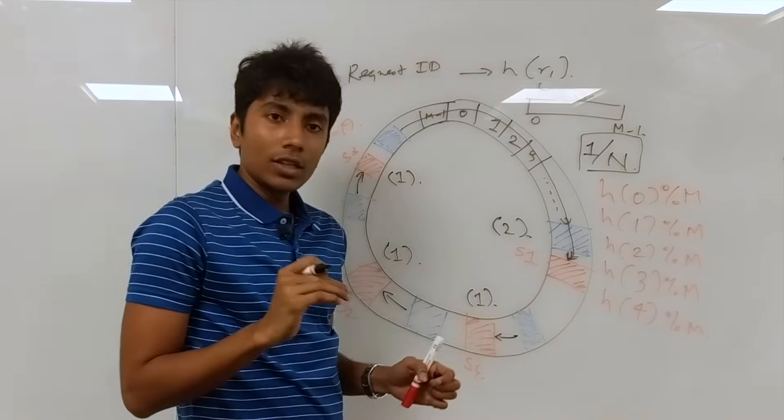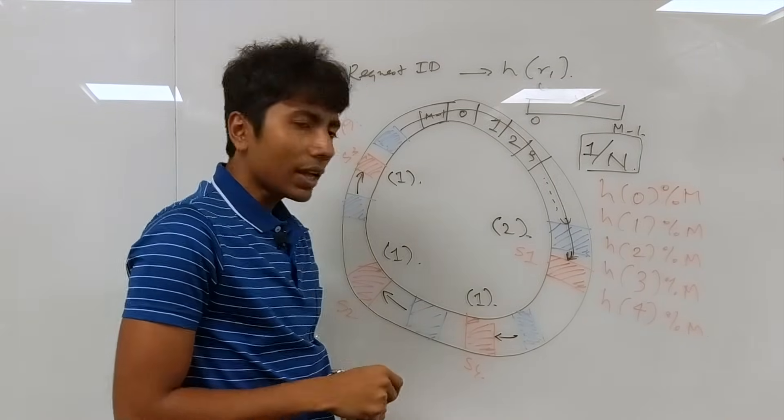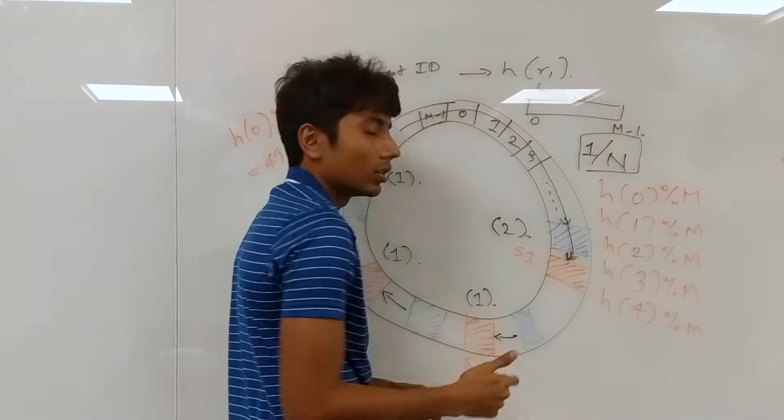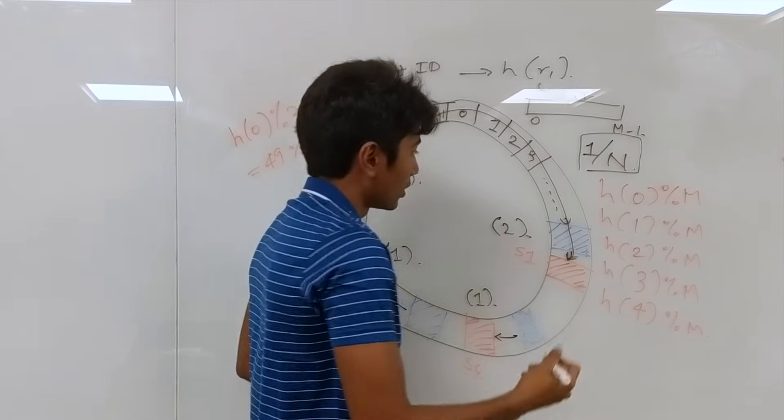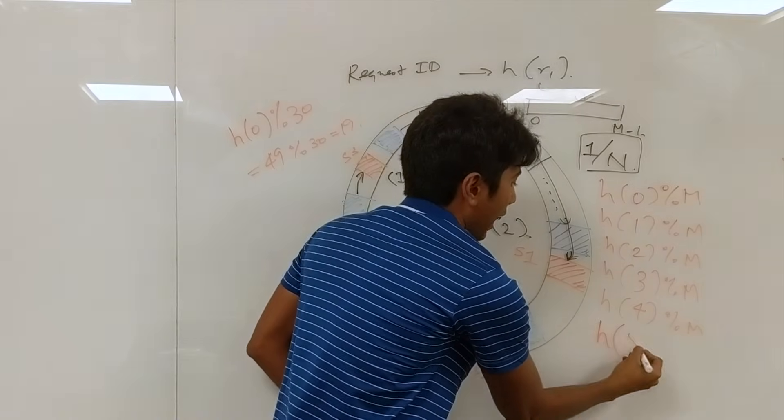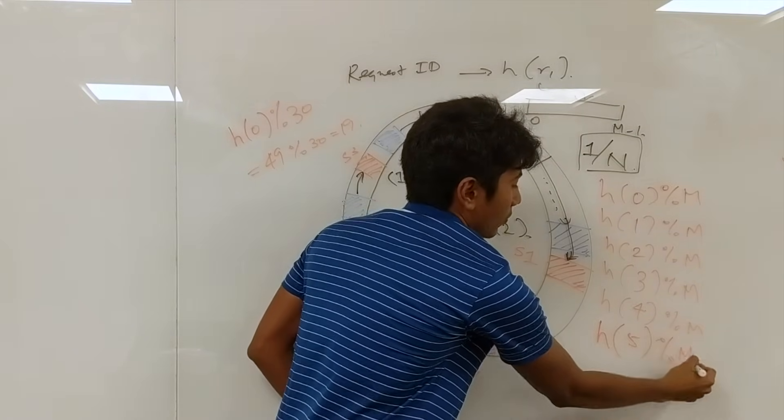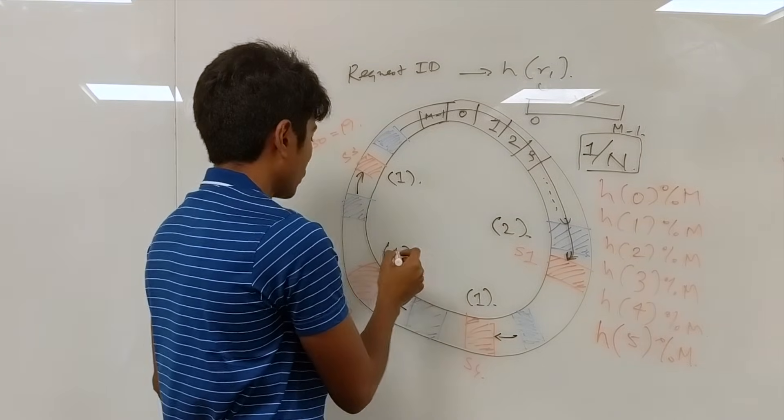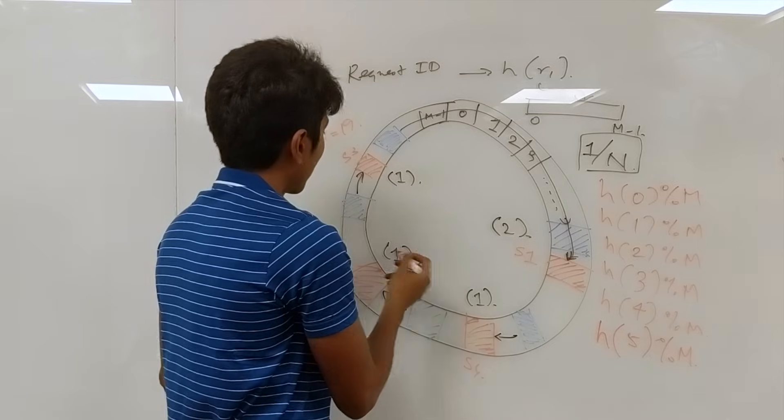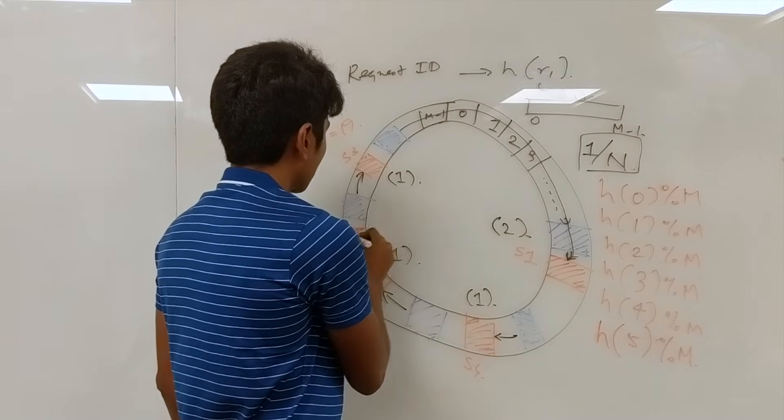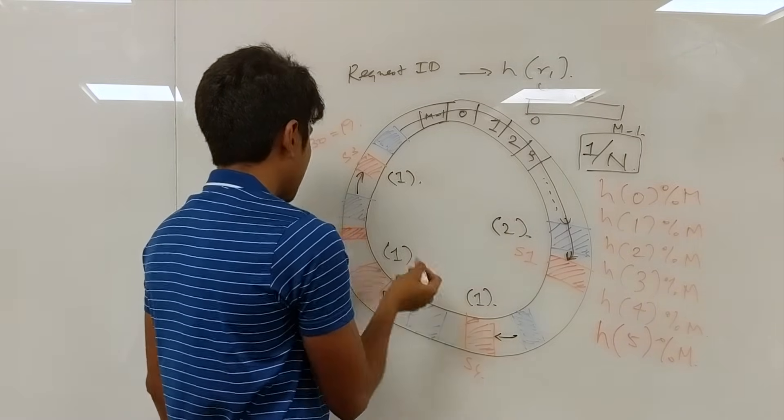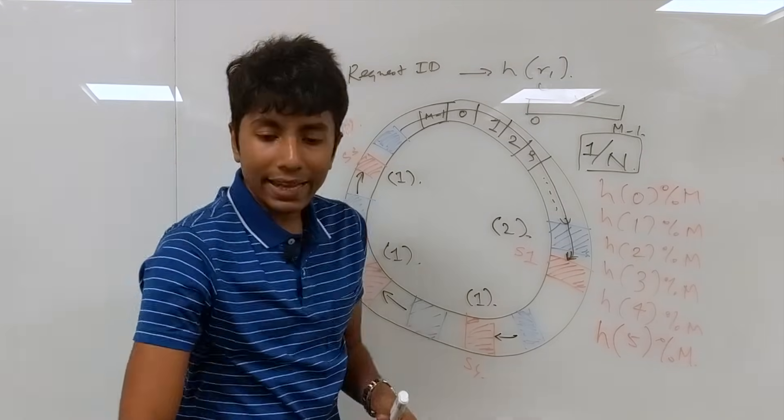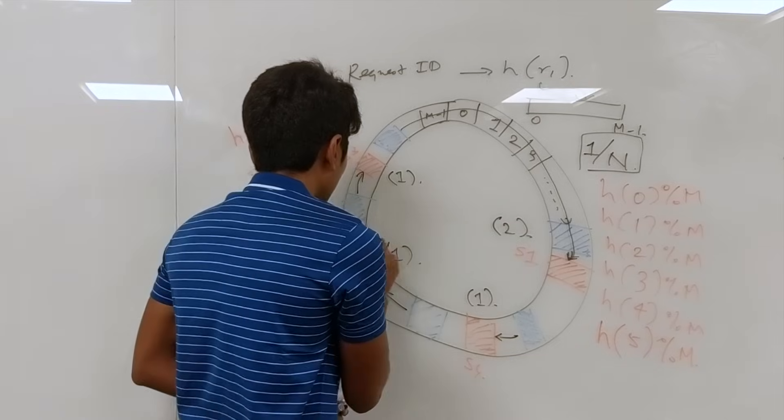The special thing is now if I lose a server, let's say s1, or let's first add a server. So I have a fifth server which is mapped onto this point. Where should I add it? Over here, this is s4.